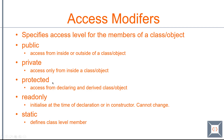The third one we have is protected. Protected basically means you can access the member from within the same class or object where it is defined, and you can also access it in any derived class or object.